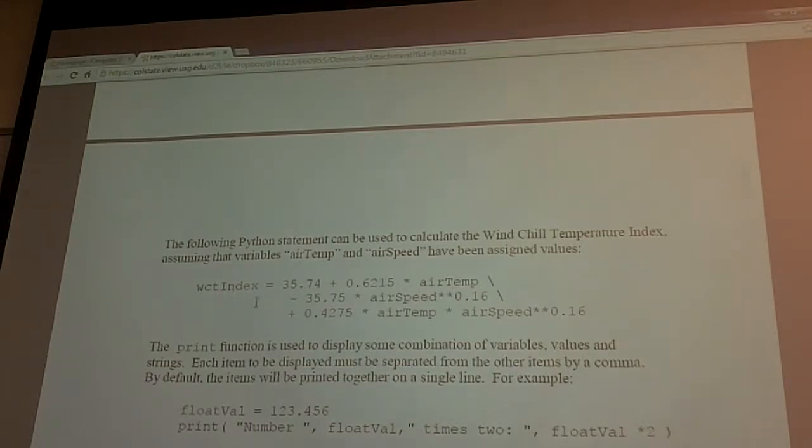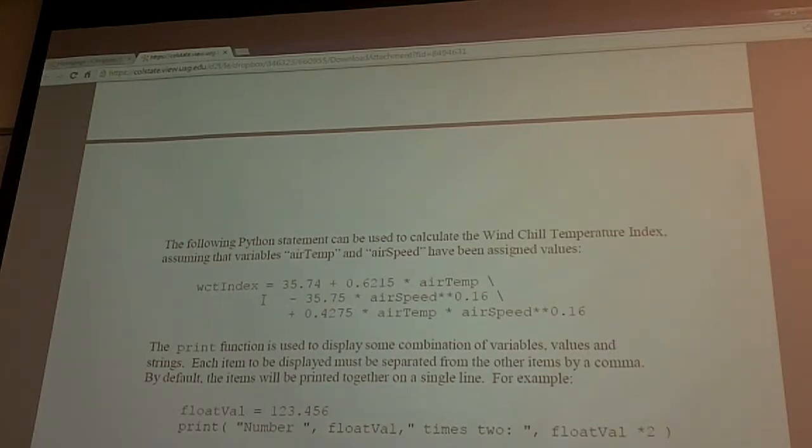This is the formula. Wind chill index. You need the air temperature, the current air temperature. Well, first you have 35.74. Add to that the product of 0.6215 and the air temperature in Fahrenheit. And then subtract from that. That's the subtraction. And if you're wondering about this backslash, that's when you continue on to a second line.